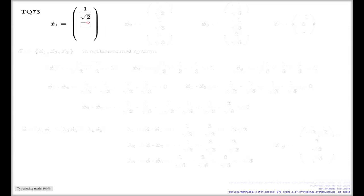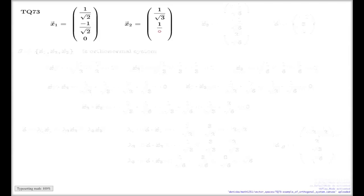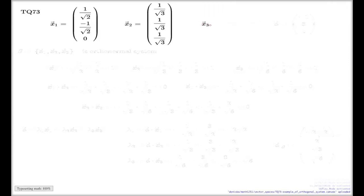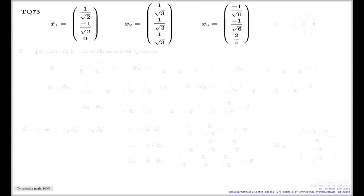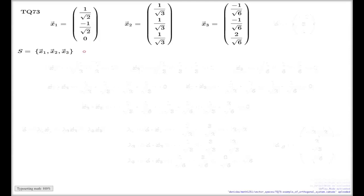Here's my vector x1, which is a three-component vector: 1 over root 2, negative 1 over root 2, and 0. x2 is again a three-component vector with all components identical to each other, all of them 1 over root 3. The third vector x3 has components negative 1 over root 6, negative 1 over root 6, and the third component is 2 over root 6. The claim, which we have to verify, is that the system S composed of these three vectors is orthonormal.